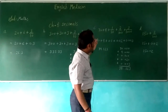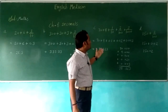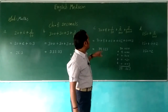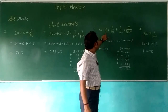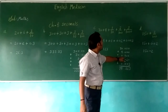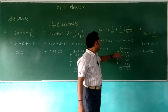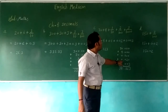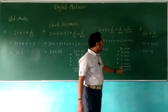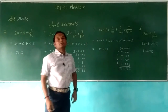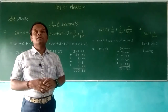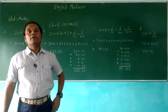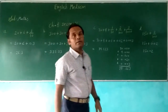Here 70 is given, so 70 plus 9 plus 1 by 10 gives 0.1, 2 by 100 gives 0.02, and 3 by 1000 gives 0.003. So this way we can solve, and these are the solutions on decimal. Thank you children, bye.